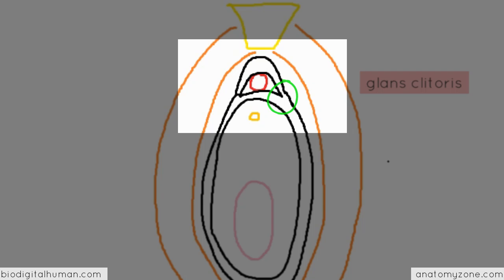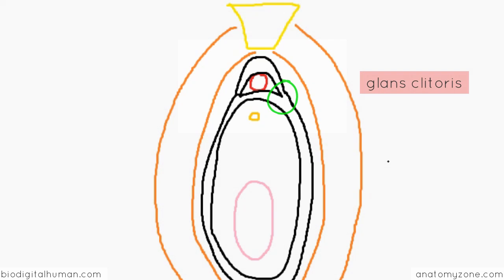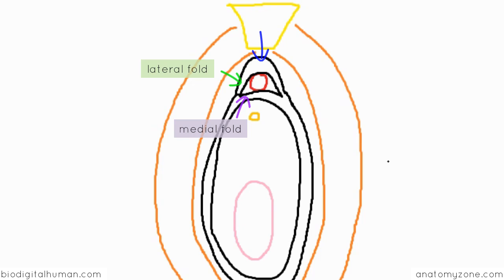So this bifurcation produces two folds. You've got a lateral and a medial fold. Anteriorly, the lateral folds meet in front of the clitoris and they form what is known as the hood of the clitoris or the prepuce.